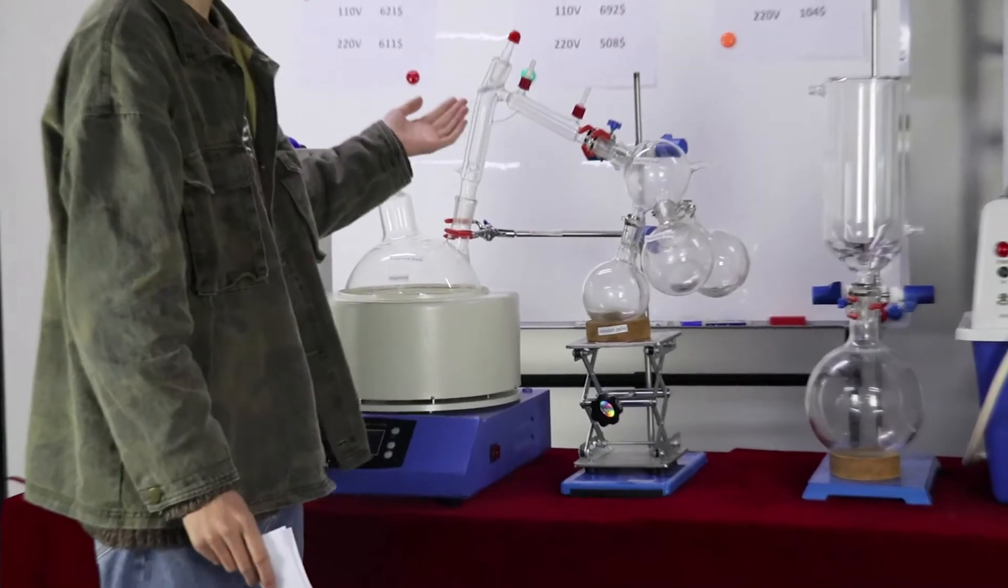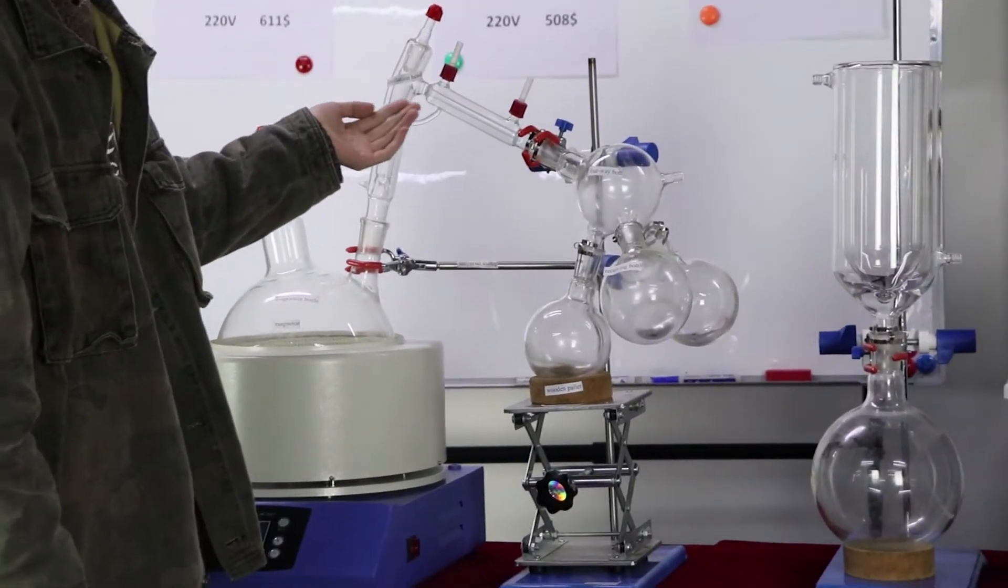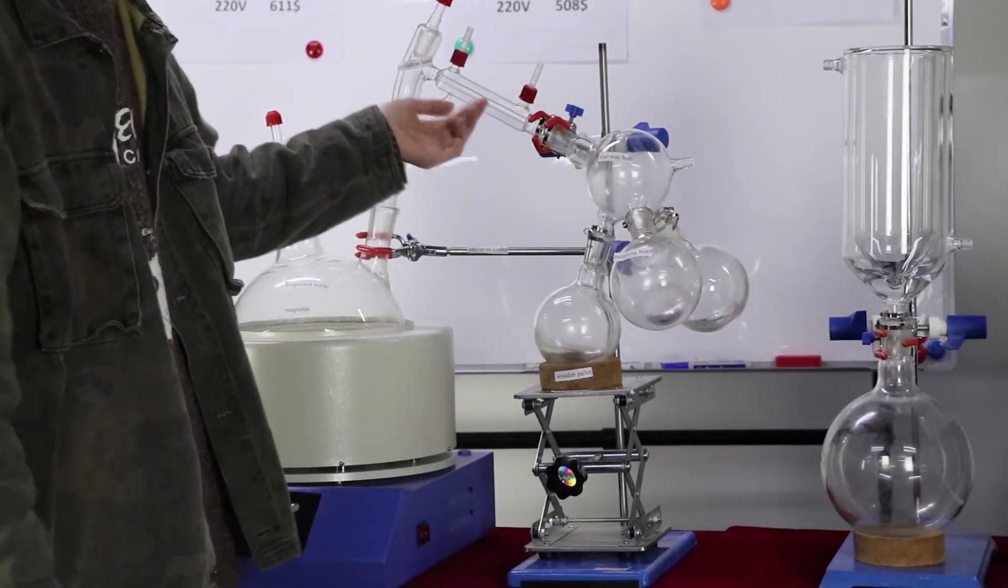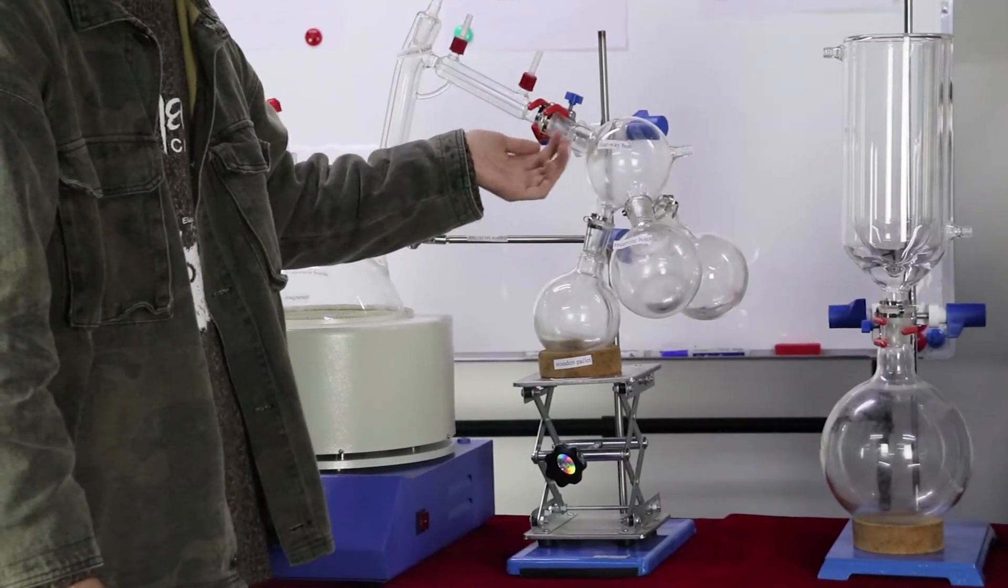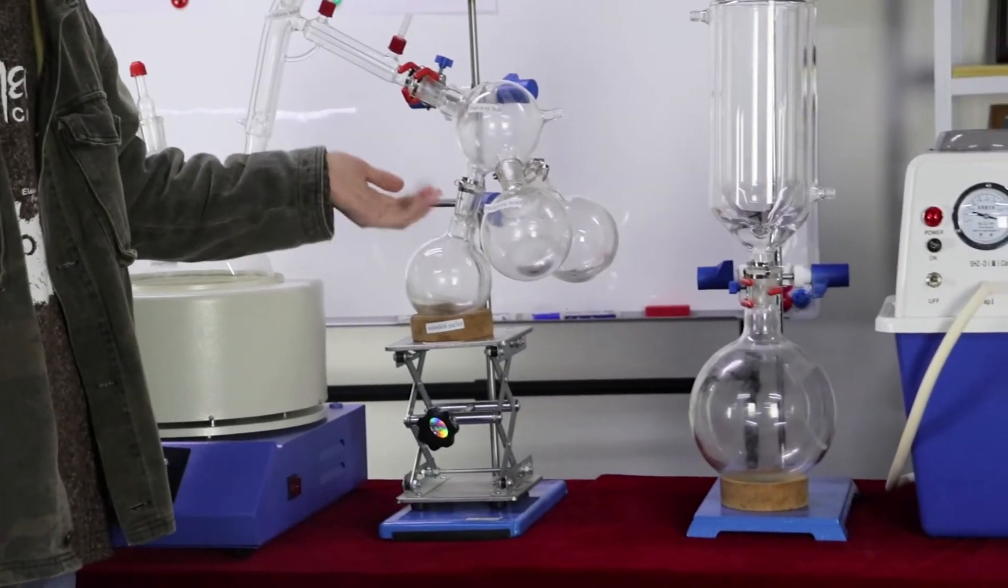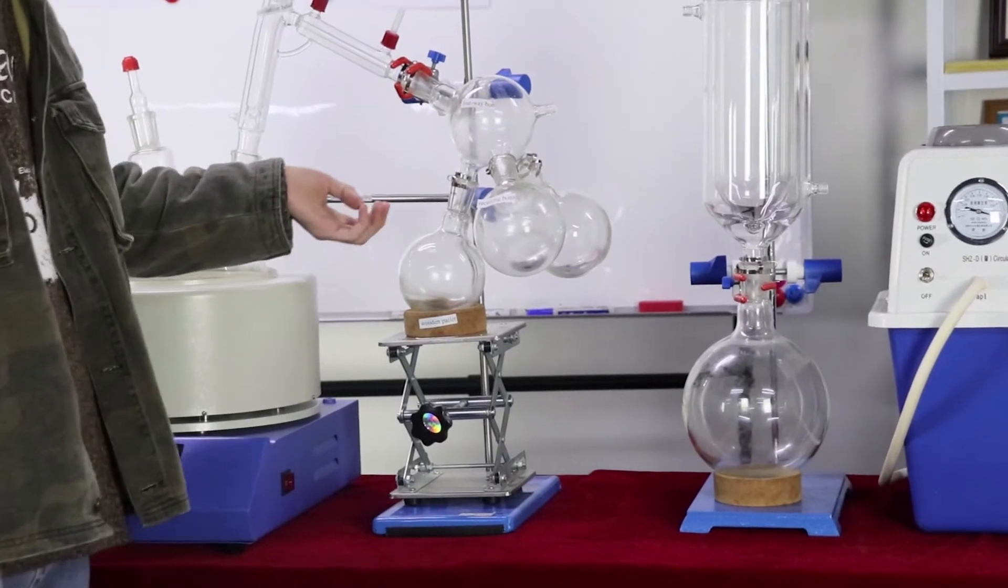Then, this is the distillation head. Then, this is the condenser. And this is the 4-way bottle. It connects the 3-way bottle.